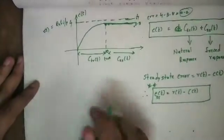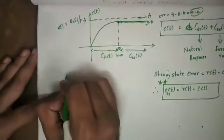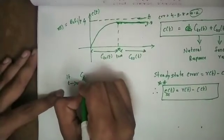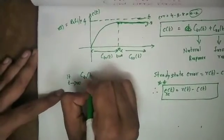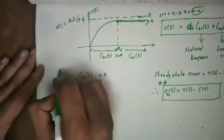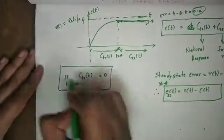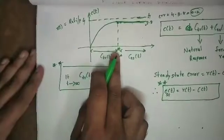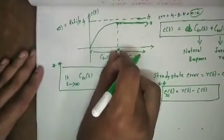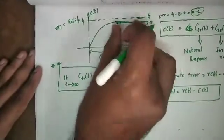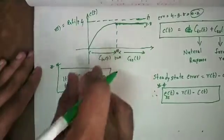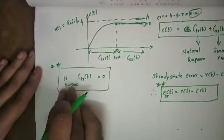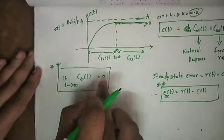Let me conclude the statement: limit t tends to infinity of c_transient(t) equals 0. If t equals infinity, it is transient. If t equals infinity, you can see steady state. The transient response as t tends to infinity is 0.